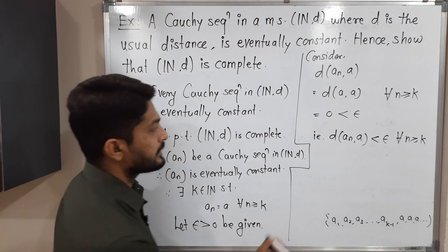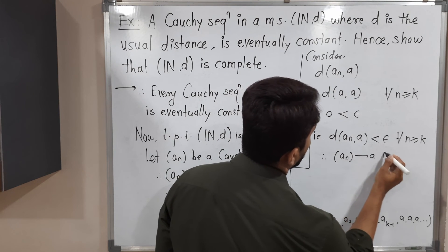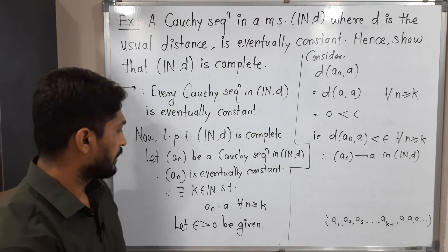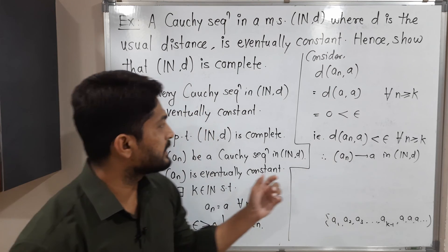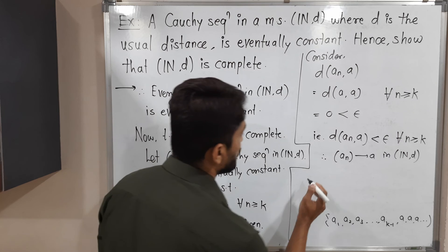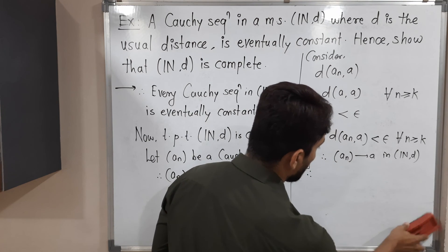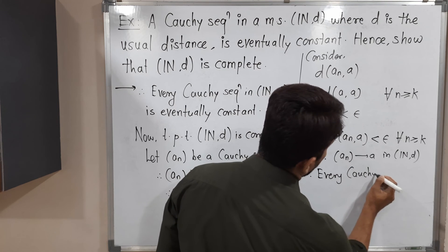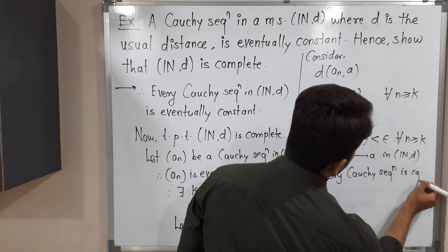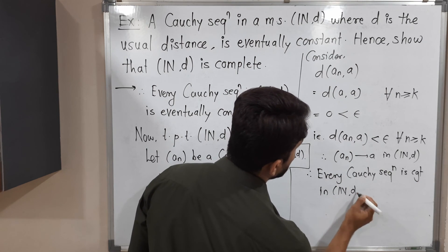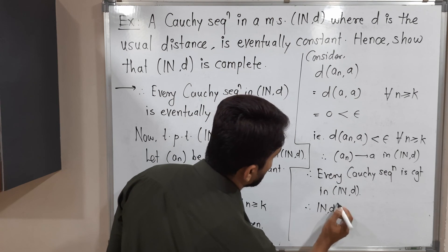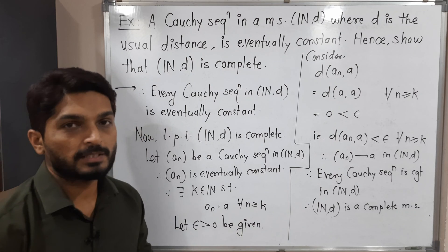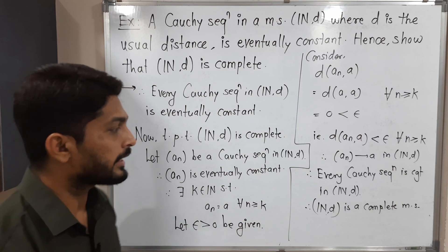This is the definition of a convergent sequence. Therefore An converges to A in N, D. So we started with any Cauchy sequence and proved it is convergent. Therefore every Cauchy sequence is convergent in N, D. Therefore N, D is a complete metric space. This is by definition of complete metric space — every Cauchy sequence is convergent — so we can declare N, D is a complete metric space.